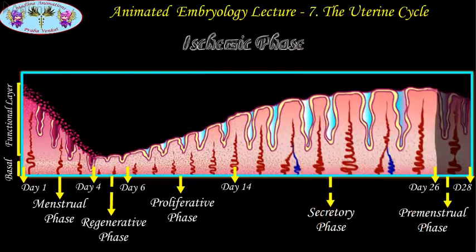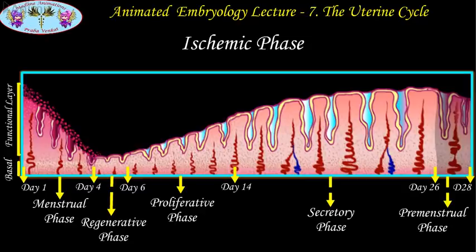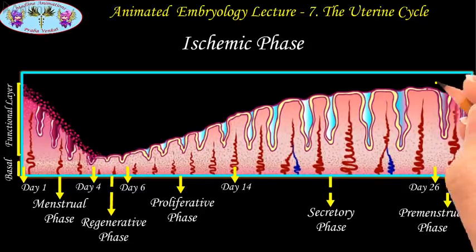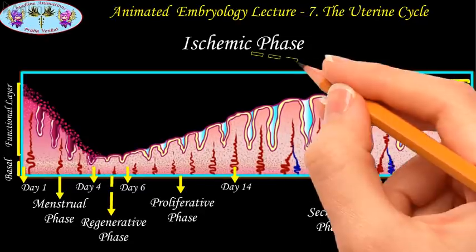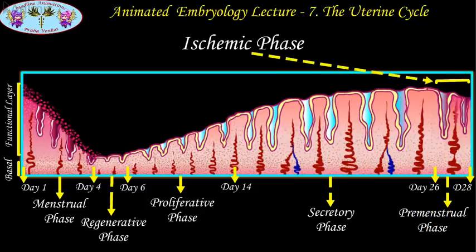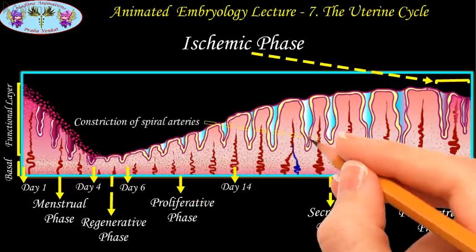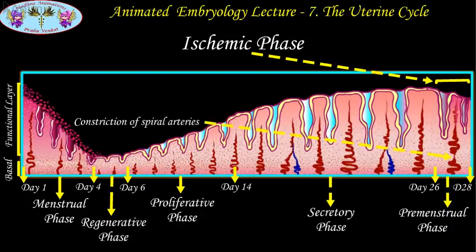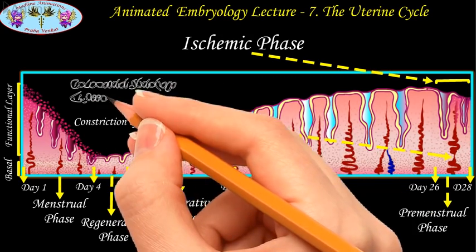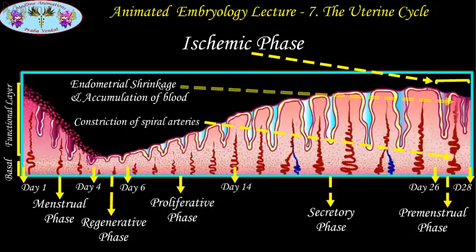The last phase is the ischemic phase, also known as the premenstrual phase, occurring from the 26th to the 28th day. It occurs when the oocyte is not fertilized. Ischemia occurs as the spiral arteries constrict, resulting in a pale appearance of the endometrium. Hormone withdrawal results in stoppage of glandular secretion, loss of interstitial fluid, and marked shrinking of the endometrium. Vasodilation then occurs with accumulation of pools of blood in the lamina propria.